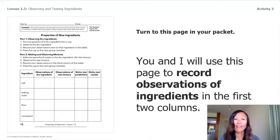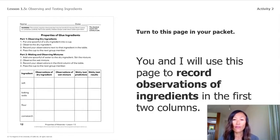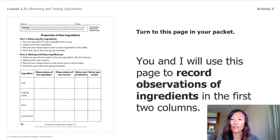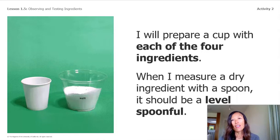Activity one today is observing dry glue ingredients. If you have a packet at home, turn to this page — it's titled 'Properties of Glue Ingredients.' It's okay if you don't; we can use this page on the screen together. You and I will use this page to record observations in the first two columns: ingredients, observations of dry ingredients, and observations of wet mixture. For now we're going to ignore the last two columns.